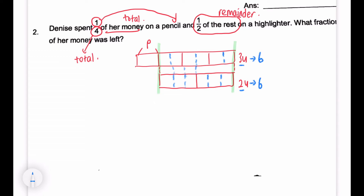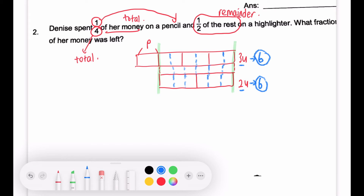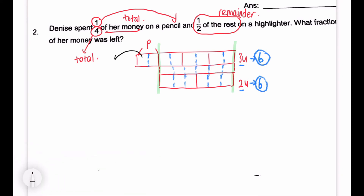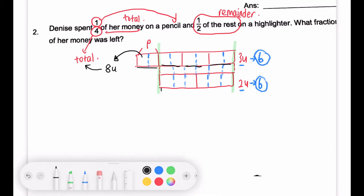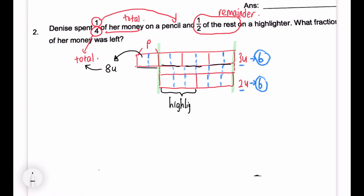Now you can see they are equal — six units each section. We cut the one unit for the pencil into two as well. For the total, there are two, four, six, eight units. Since half of the portion was spent on a highlighter, the other half is what's left — three units left. The total is eight units. So our answer is three-eighths of her money was left.